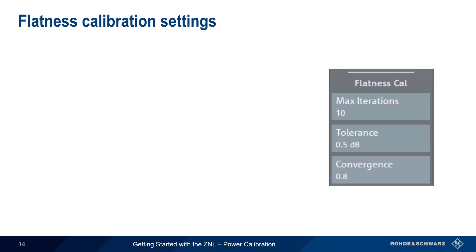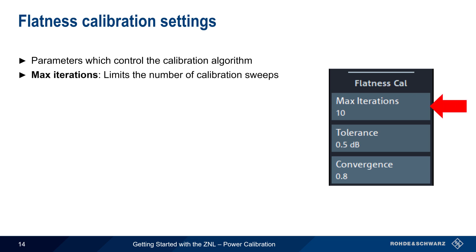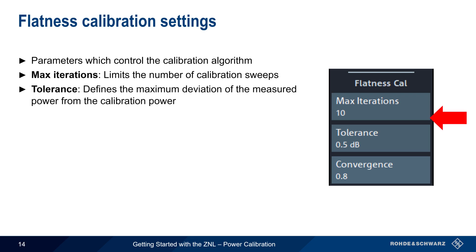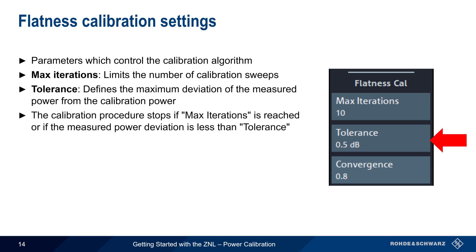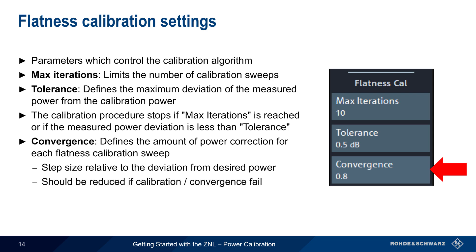The final set of configurable parameters are those for flatness calibration, and these parameters control the calibration algorithm. Max Iterations limits the number of calibration sweeps, and Tolerance defines the maximum allowable deviation of measured power from calibration power. The iterative power calibration routine will stop once either Max Iterations is reached, or when the deviation of measured power is less than the Tolerance value. Convergence defines the allowable change in power correction for each flatness calibration sweep — specifically, the step size relative to the amount of deviation from the desired power level. This value should be reduced if calibration or convergence fails. In most cases, the default values will not need to be changed.